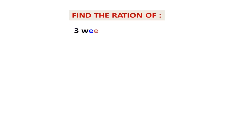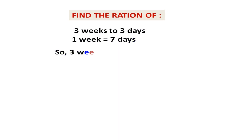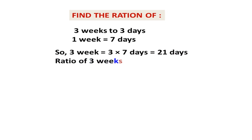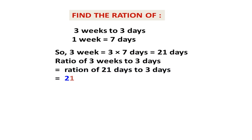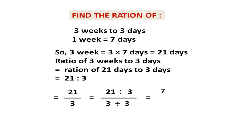Find the ratio of 3 weeks to 3 days. Since 1 week equals 7 days, 3 weeks equals 3 × 7 = 21 days. The ratio of 3 weeks to 3 days equals the ratio of 21 days to 3 days, which equals 21:3 = 21/3 = 7/1 = 7:1.